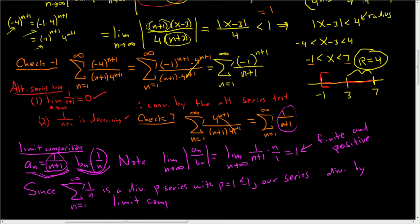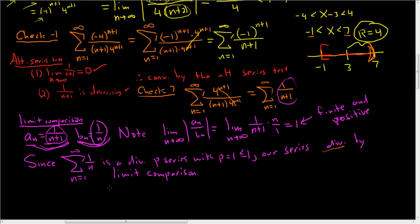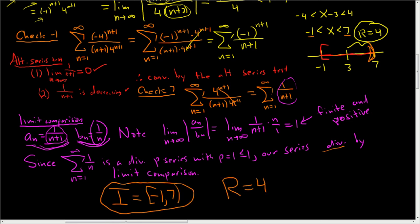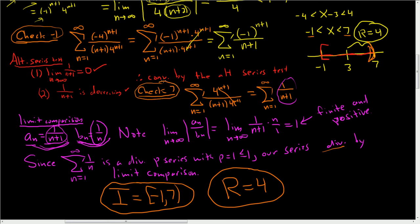There's a lot going on in this problem, but every single step is justified. The interval of convergence is bracket negative 1 comma 7 parenthesis — converges at negative 1 but diverges at 7. The radius of convergence is 4. We checked the endpoints and justified convergence and divergence at each one.